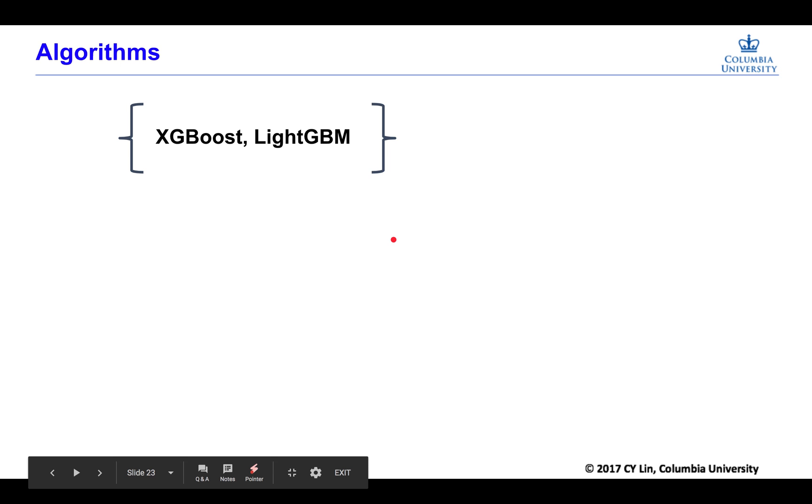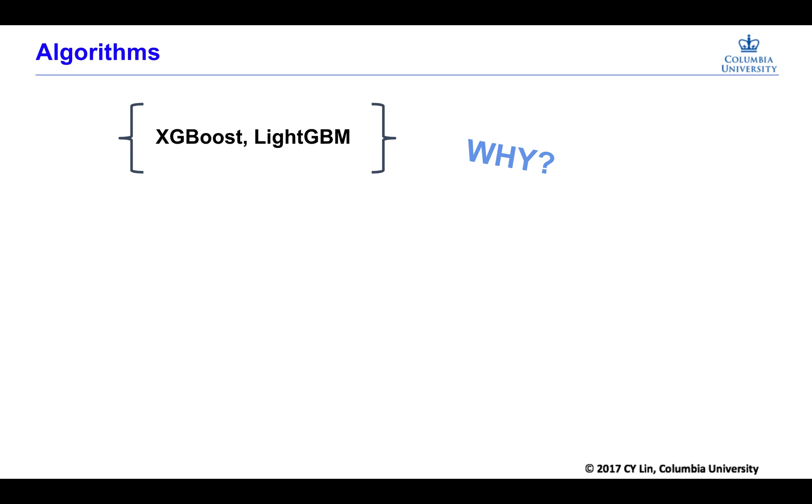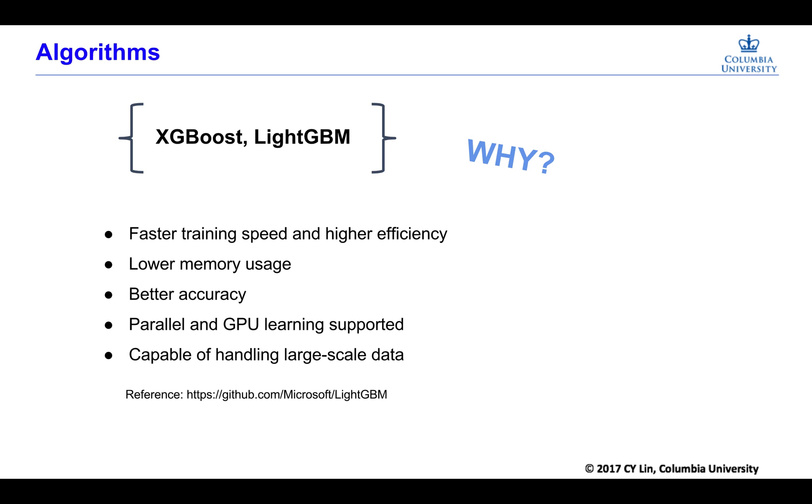The algorithms we used are XGBoost and LightGBM. Why we use these two algorithms instead of traditional support vector machine or logistic regression? We can do this for our solution because it has faster training speed and high efficiency. Also, it has lower memory usage. In addition, it is capable of handling large scale data. If we use SVM and logistic regression here, it will be super slow.